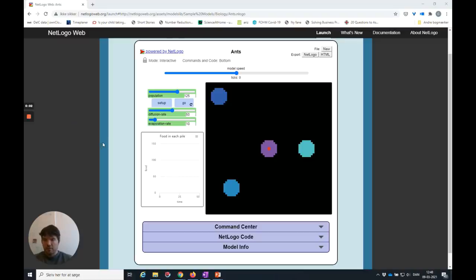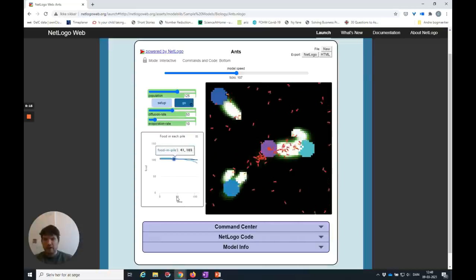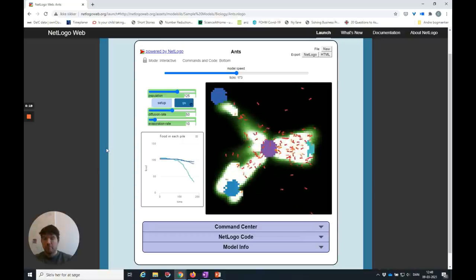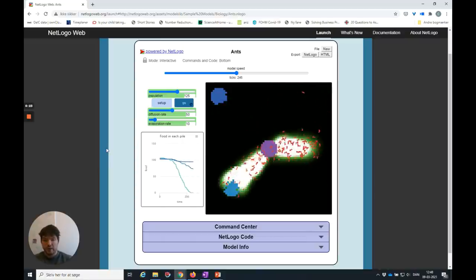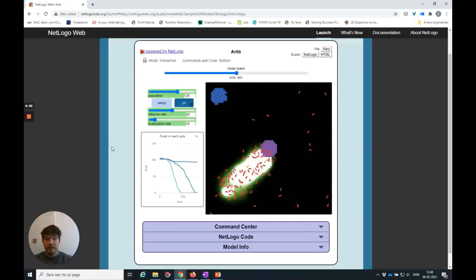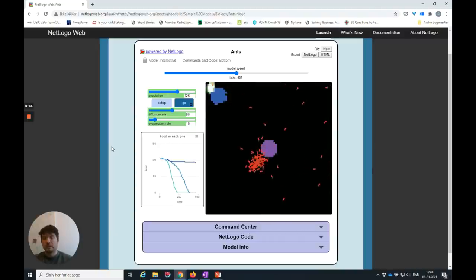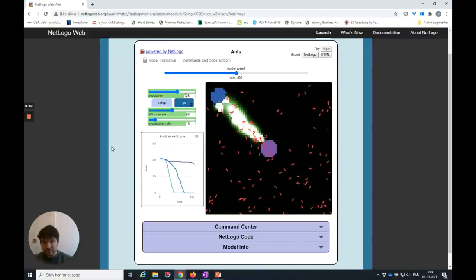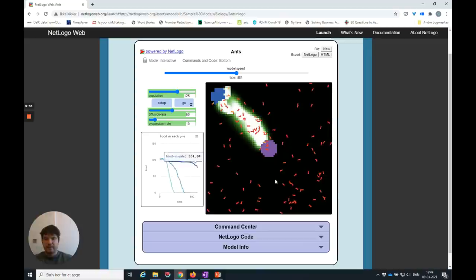This is the simulation model of ant behavior from the link in the PowerPoint slide. This is the ant nest in the middle, all the red little thingies are ants running around, and these circles are food posts. You see some greenish stuff, that's the chemical trail that ants leave behind. When they found food and return back to their home, they leave behind a chemical trail that others can follow. The ants are just running around at random. They don't have a direction.